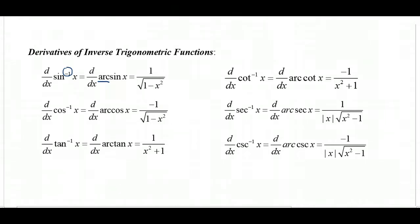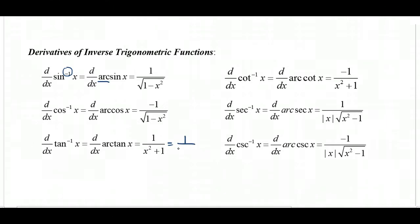The derivative of tan inverse, or arctangent, is one over x squared plus one, which is the same as one over one plus x squared, because addition is commutative, so we can switch the two terms in the denominator.